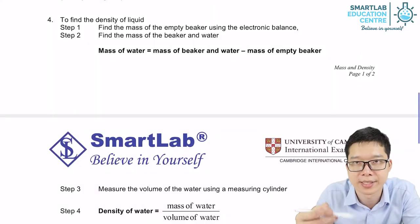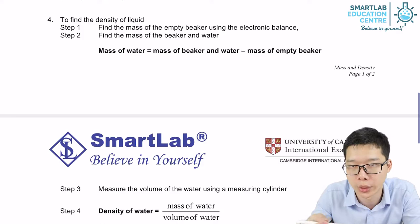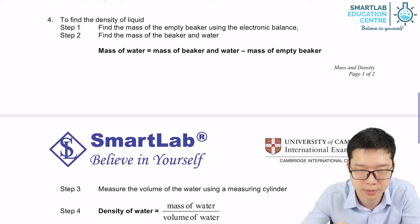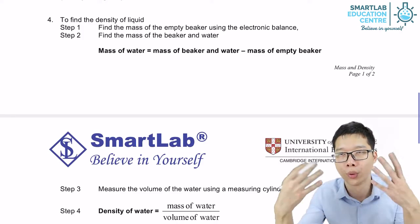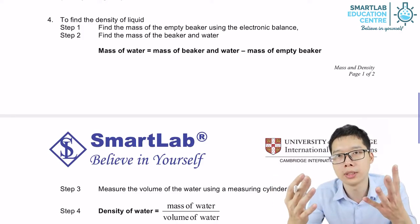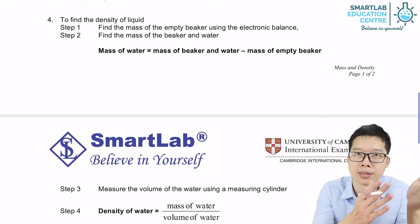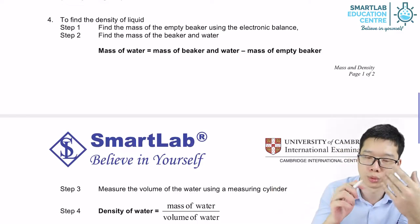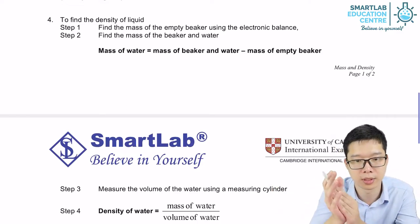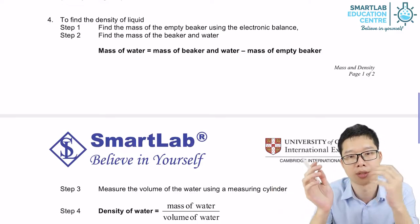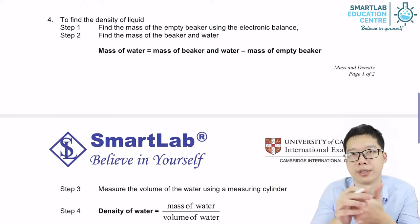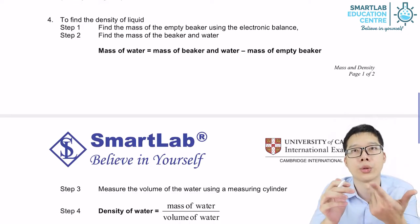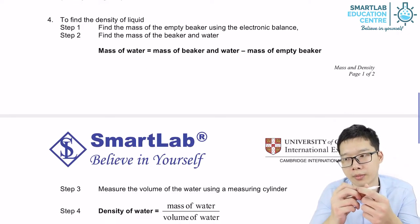How are we going to find the density of liquid? By knowing the formula: density is mass over volume. If you want to know the density of a liquid, we must know the mass of a liquid and the volume of the liquid.